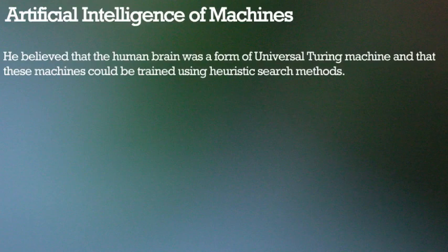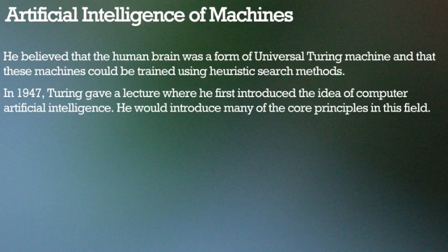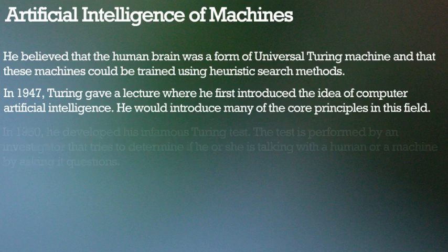Turing believed that the human brain was a form of universal Turing machine and that these machines could be trained using heuristic search methods. In 1947, Turing gave a lecture where he first introduced the idea of computer artificial intelligence. He would introduce many of the core principles in this field.